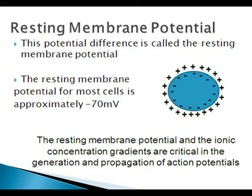This potential difference that exists because of the unequal distribution of positive charges is called the resting membrane potential. The resting membrane potential is approximately negative 70 millivolts in most cells. The resting membrane potential and the ionic concentration gradients are critical in the generation and propagation of action potentials.